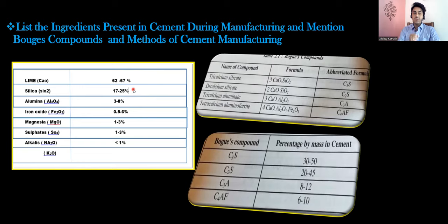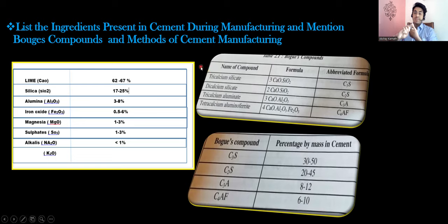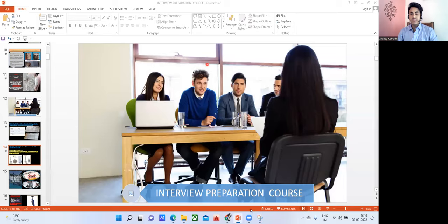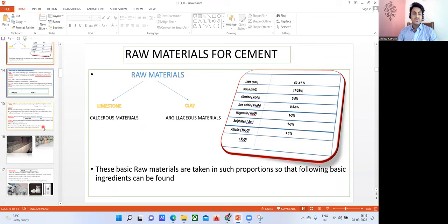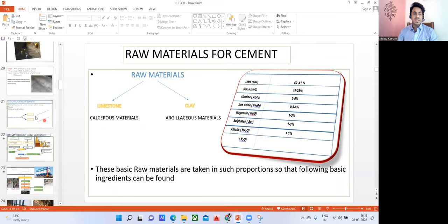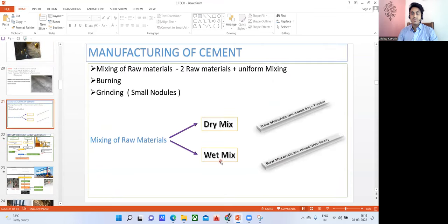There is a lot of concept here — I've already explained it in my concrete technology course. In cement, we manufacture cement in two ways: one is the dry method, the second is the wet method. They may ask this question also. Cement can be manufactured in two ways: dry mix and wet mix. We always go with dry mix.